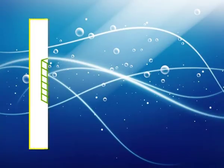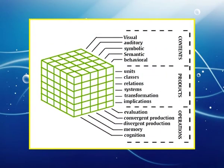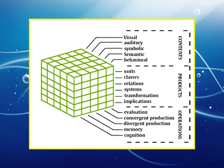Looking at this model, we find five operations: cognition, memory, divergent thinking, convergent thinking, and evaluation — applied to four types of contents: figural, symbolic, semantic, and behavioral. This process results in six types of products: units, classes, relations, systems, transformations, and implications. This is all about J.P. Guilford's theory.